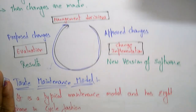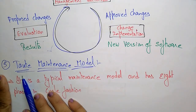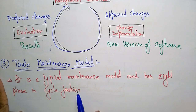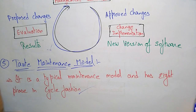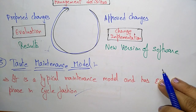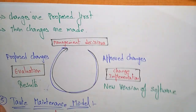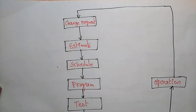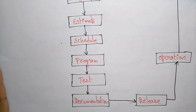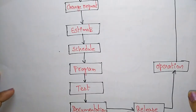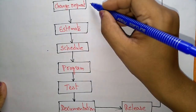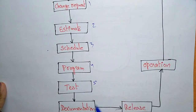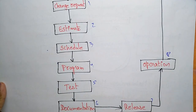The next is the TOTS maintenance model. It is a typical maintenance model that has eight phases in a cycle fashion. Let us see what the eight phases are that are present in the TOTS maintenance model.